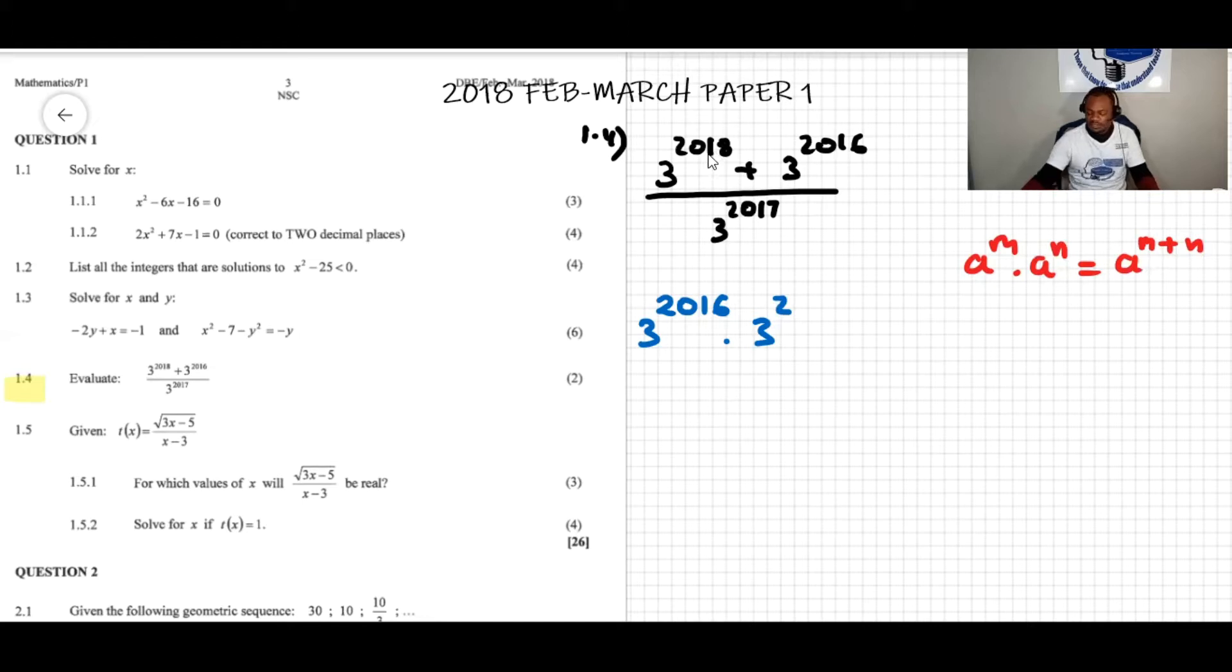Similarly, I'll leave it like 3 to the power of 2016, all over 3 to the power of—on the right, 3 to the power of 2016 times 3 to the power of 1. The choice of 2016 is because it is the term that has the smallest exponent, so it is the common factor in the numerator.